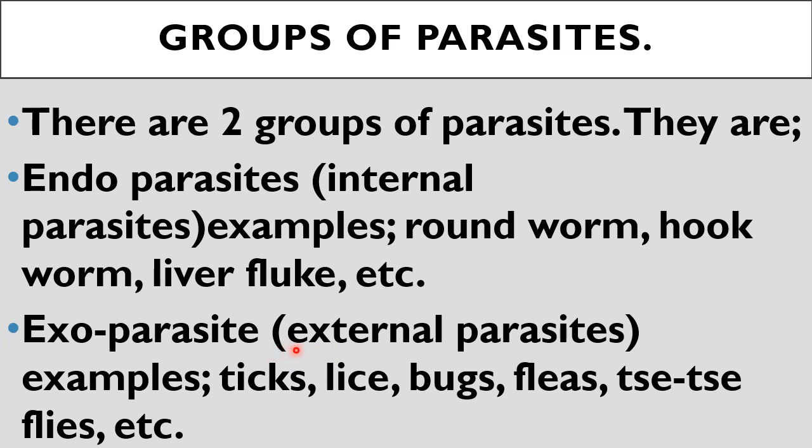The second group is exoparasites. Exoparasites are external parasites, like the ticks, fleas, hair bugs, lice, and tsetse flies shown earlier. All these are exoparasites — they stay on the body of their host. The animal they are living on is called the host. They feed off those animals, and when the animals are not properly treated, they can die due to the trouble caused by parasites.